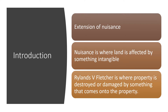So, straight in with an introduction to Rylands and Fletcher torts. This is an extension of nuisance. Nuisance is where land is affected by something intangible — something which you can't touch — such as fumes or smells. Claims under Rylands and Fletcher are where property is destroyed or damaged by something that comes onto the property from an adjoining property.